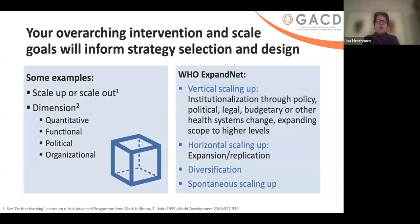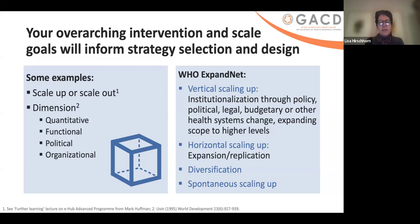When you think about your overarching intervention and scale, these goals will inform your strategy selection and design. There are examples of scale-up or scale-out: quantitative — going from a few to many — making things more functional, thinking about political scale. The WHO ExpandNet defines vertical scaling up as institutionalization through policy, political, legal, budgetary, or other health system changes that expand the scope to larger, higher areas. Other people define vertical scaling up as expanding the scope of what the service is — for example, going from basic hypertension care in primary healthcare all the way up to tertiary care hospitals.